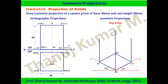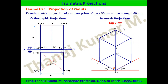The height of any solid — prism, pyramid, or any object — is always drawn as vertical lines in isometric projection. After constructing the vertical lines at all four corners, join the endpoints to complete the top face, and name the points A, B, C, D.